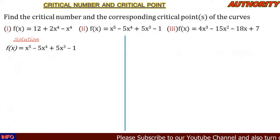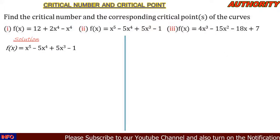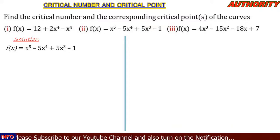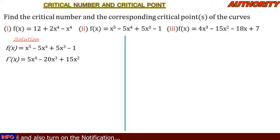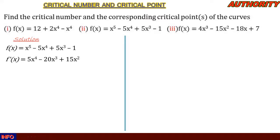For number 2, f(x) = x⁵ - 5x⁴ + 5x³ - 1. The first step is to find the derivative: f′(x) = 5x⁴ - 20x³ + 15x².